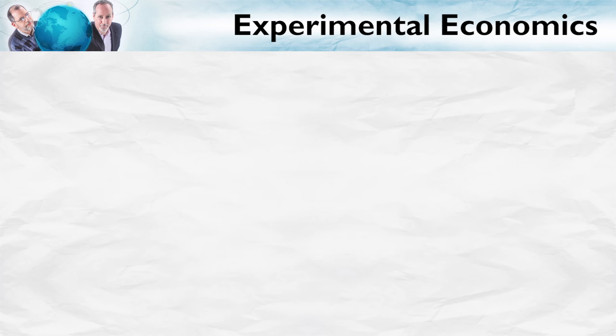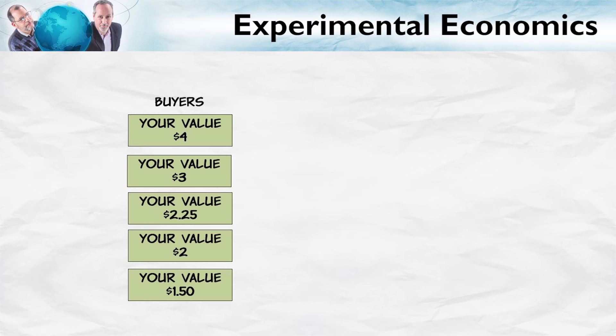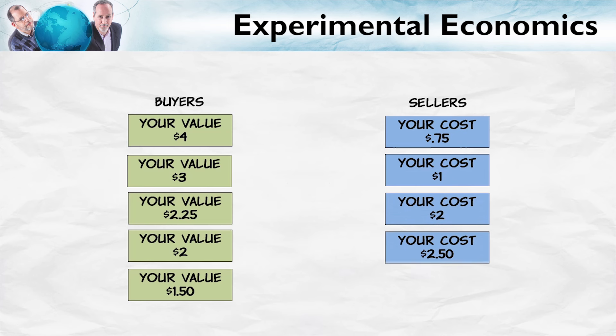Smith's first experiments were very simple. He gave a group of students, called the buyers, cards which told them the value that they placed on a good — the maximum they would be willing to pay for the good. He then did the same thing for sellers, giving them cards which told them their costs — the minimum price at which they would be willing to sell the good. Notice that the distribution of buyer values determines a demand curve.